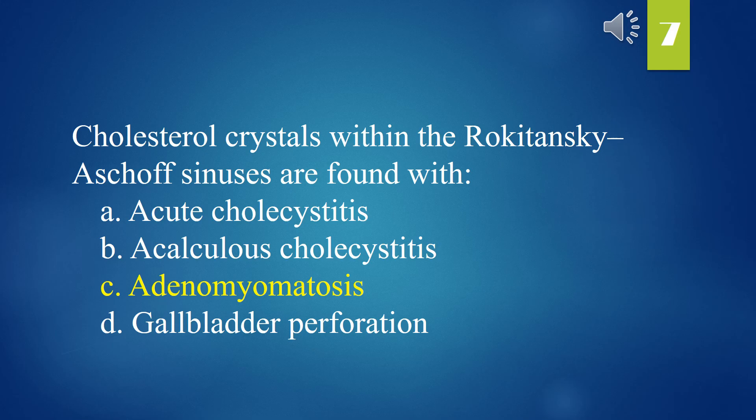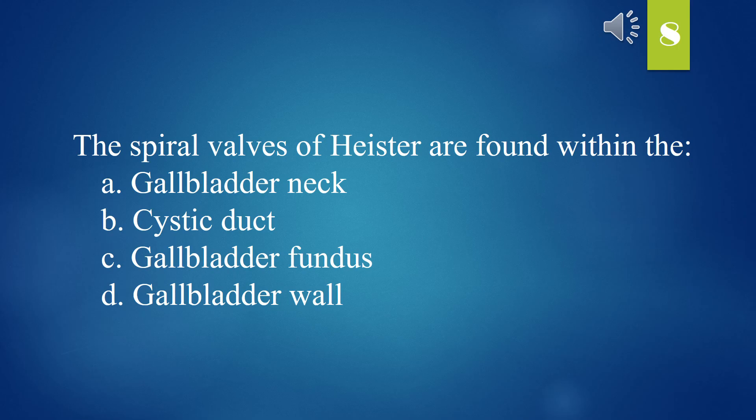The spiral valves of Heister are found within the: A. Gallbladder neck. B. Cystic duct. C. Gallbladder fundus. D. Gallbladder wall. The answer is B. Cystic duct.